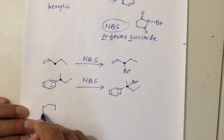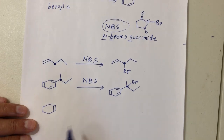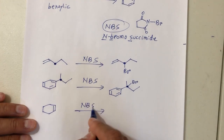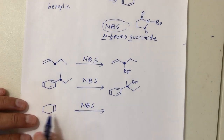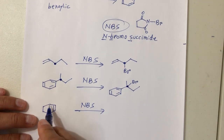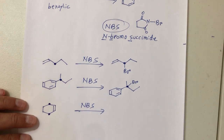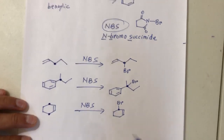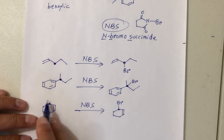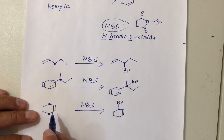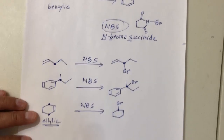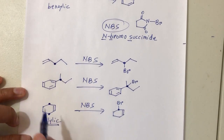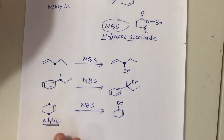One more example to make sure you're not confused about allylic and benzylic. Here we have a double bond attached to a carbon but no aromatic ring, so we have allylic positions on both sides of the double bond. You can choose either one — the product will be the same. The most important part is identifying which carbon is allylic or benzylic, and then you know where to put the bromine.